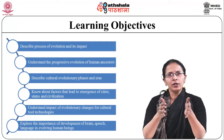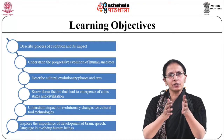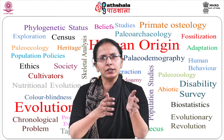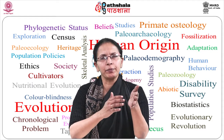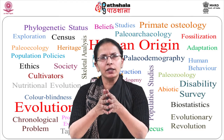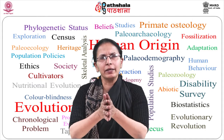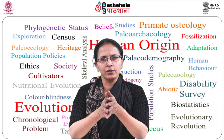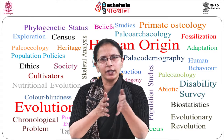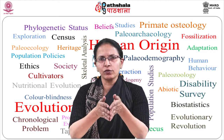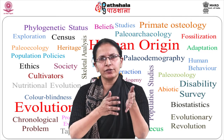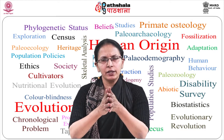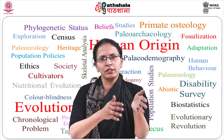Evolution is the gradual process by which the present diversity of plants and animals arose from the earliest and most primitive organisms, which is believed to have been continuing for at least the past 3000 million years. Evolution is a process of social and cultural changes in a definite direction, particularly from a simple to complex state, from a state of homogeneity to a state of heterogeneity. Evolution of a culture refers to the development of a culture and society through progressively more complex stages. Evolution is a continuous process of diversification and integration.